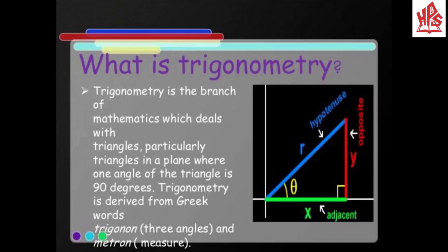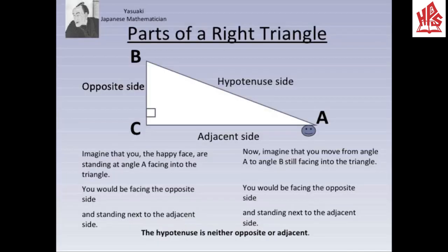Here you can see a right angle triangle clearly. Now we are going to work on the right angle triangle and discuss its parts. As we discussed in previous classes, the side opposite to the 90-degree angle is the longest side and is known as the hypotenuse. In this figure, side AB is the hypotenuse. Now imagine that you are standing at angle A, facing into the triangle. Side BC is opposite to your face, and you are standing next to the adjacent side AC. Hence, for angle A, side BC is the opposite side and side AC is the adjacent side.